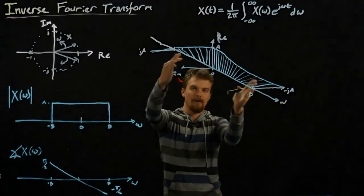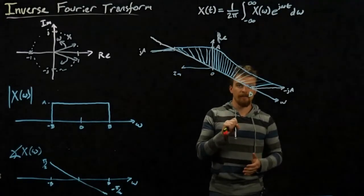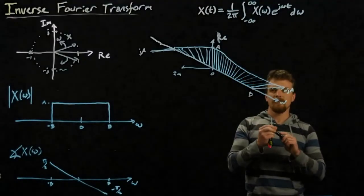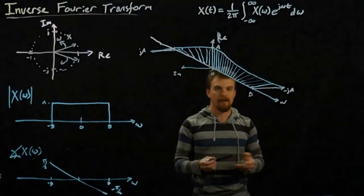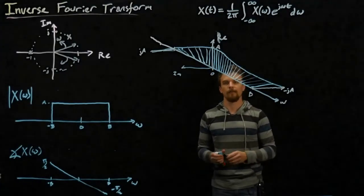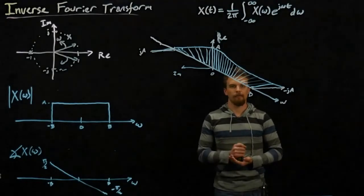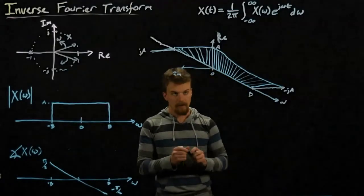what that does is, it gives us, it projects onto the real axis, the value of x of t at that time. Like I said, it's hard to visualize, and I wish we had a better way of kind of running it, but that's what's happening here.